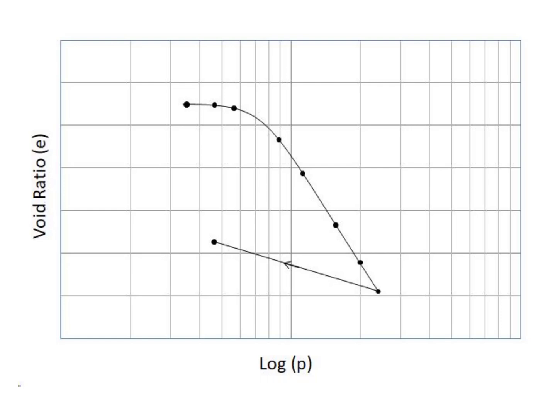This is how to determine the pre-consolidation pressure from the consolidation test results. First, from the parabolic portion of the e log p curve, locate the maximum curvature of that parabola.